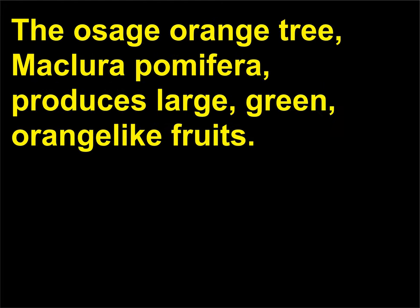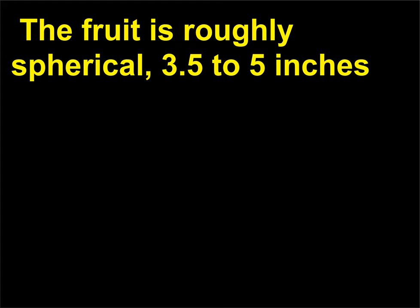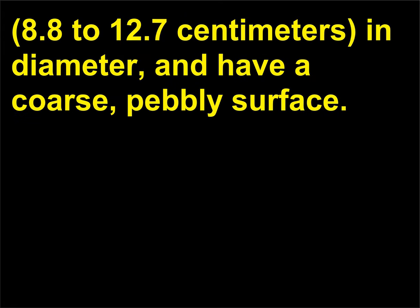What is a monkey ball tree? Maclura pomifera produces large, green, orange-like fruits. The fruit is roughly spherical, 3.5 to 5 inches (8.8 to 12.7 centimeters) in diameter, and has a coarse, pebbly surface.